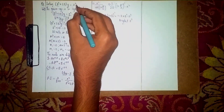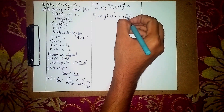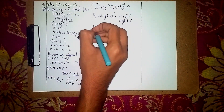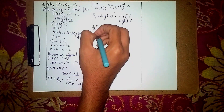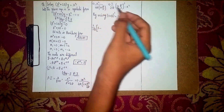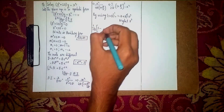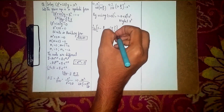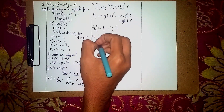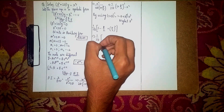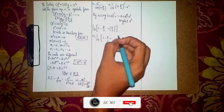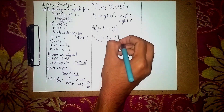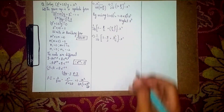We keep terms up to D² because the RHS power is 2. So it becomes: (1/(2D)) · [1 − D/2 + D²/4] · x². Expanding: (1/(2D)) · [x² − (D/2)x² + (D²/4)x²].